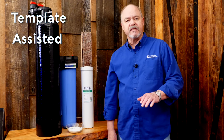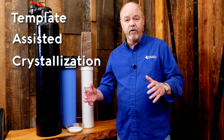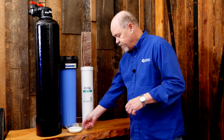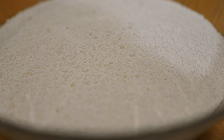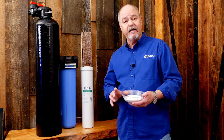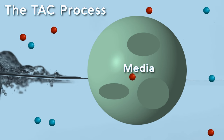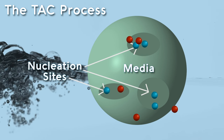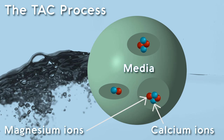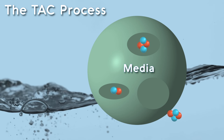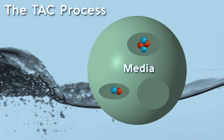The process that a scale inhibitor uses — this particular one, for example — is called template-assisted crystallization. That's a fancy word for altering these hardness minerals when they make contact with the media. The media is this white powdery stuff, and it takes surprisingly little in a housing or a full-size tank to create this process. When the hardness minerals come in contact with this media, they're physically altered into a crystal, and these little micro crystals can't come out of solution, can't create scale. So it's quite an effective process.